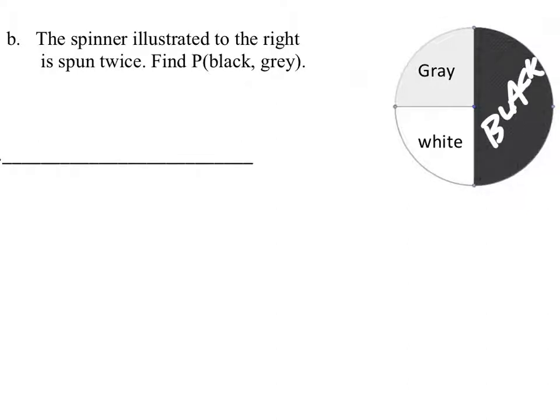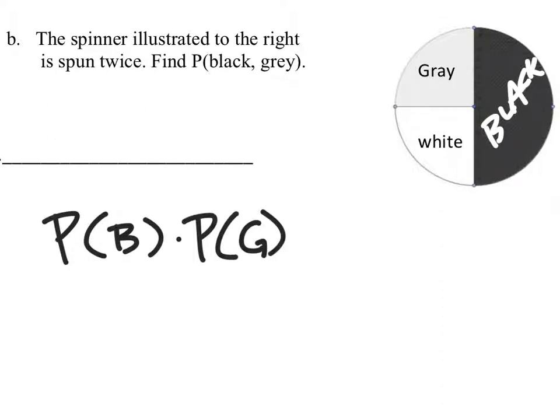So we're going to use this spinner and spin it twice. We need to find the probability of black and then gray, so let's set this up right here. We have the probability of black, and then we're going to multiply this compound probability by the probability of gray.